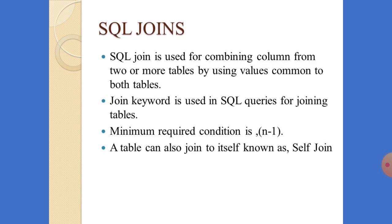Minimum one column should be the same in both tables — that is the minimum requirement condition. A table can also join to itself, which is known as a self join. That means joining a table to itself is nothing but a self join.